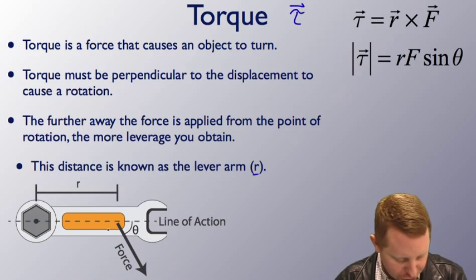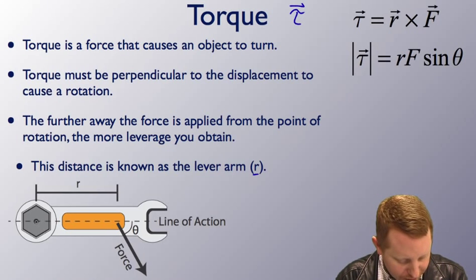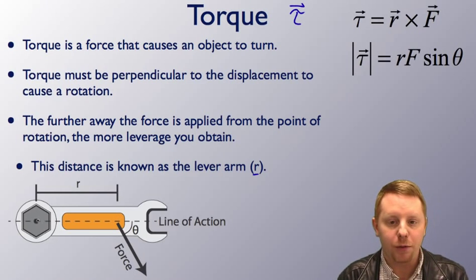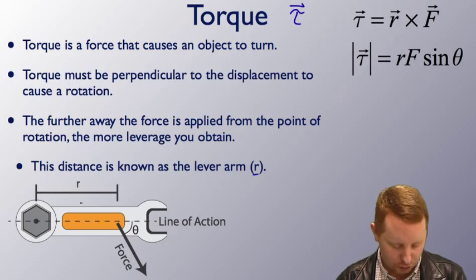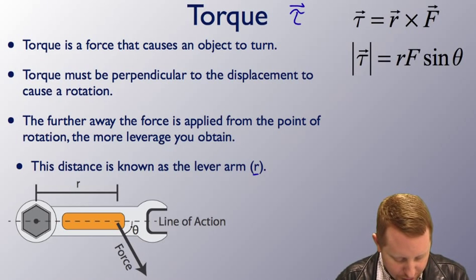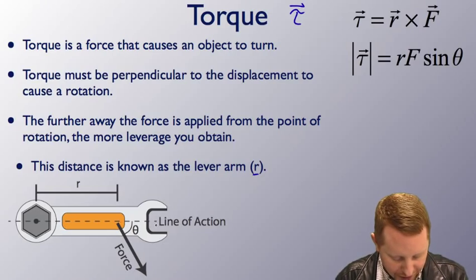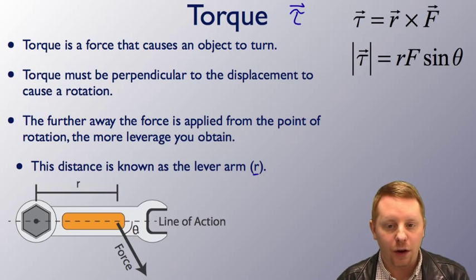Down here you see a picture of a wrench. If we're rotating about this point here on the left and we're applying a force over here, the distance from the point we're rotating about to where the force is applied, that R is the lever arm. The force is applied at an angle compared to this line of action, so that angle there we'll call theta.